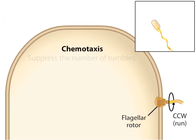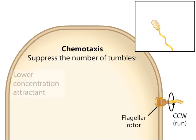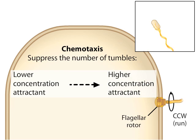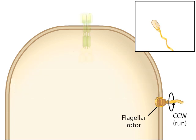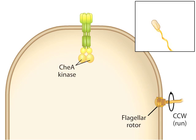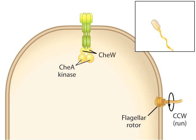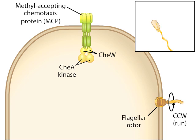The key to chemotaxis is suppressing the number of tumbles as a cell moves from a lower concentration of a chemical attractant toward a higher concentration. The switching is minimized if the cell disables enzymes called CheA kinase. CheA kinase is found attached to a protein called CheW, which acts as an intermediary protein between CheA and a chemoreceptor called a methyl-accepting chemotaxis protein, or MCP.